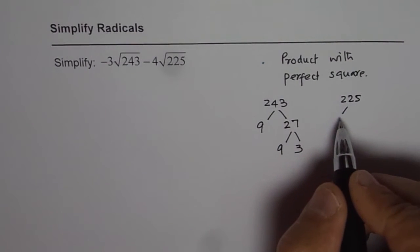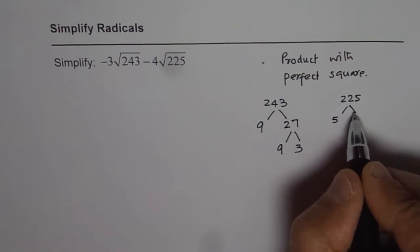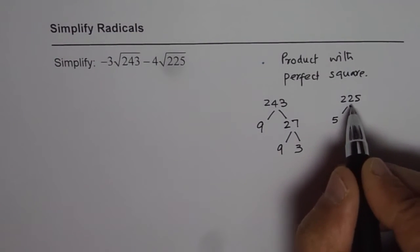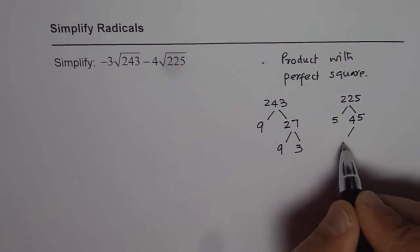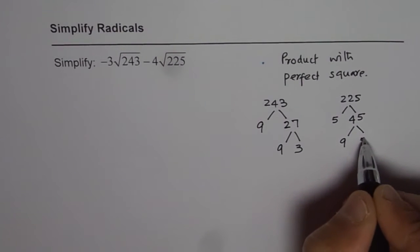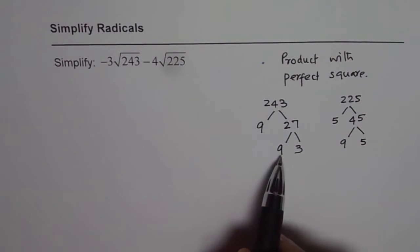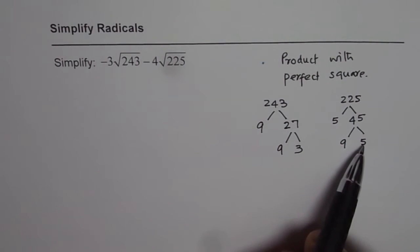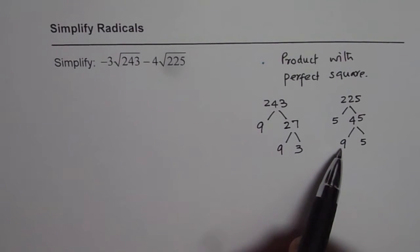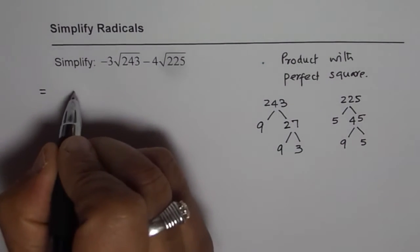Now let's factor 225. We can divide by 5 since it ends in 5. 225 divided by 5 gives 45, and 45 is 9 times 5. So 225 is 5 times 5 times 9. Here we have 5 times 5 which is a perfect square, and 9 is also a perfect square.